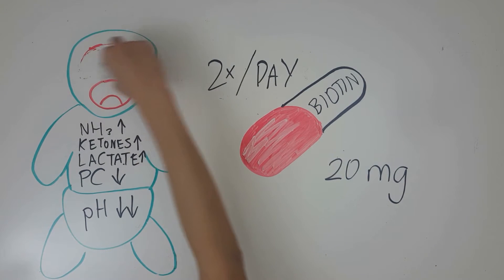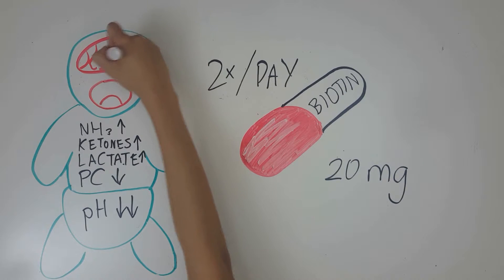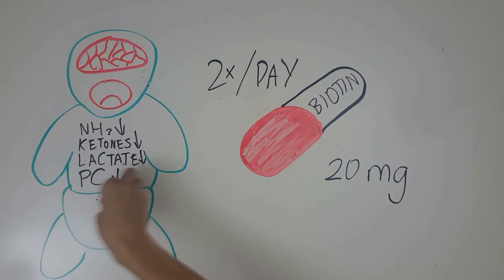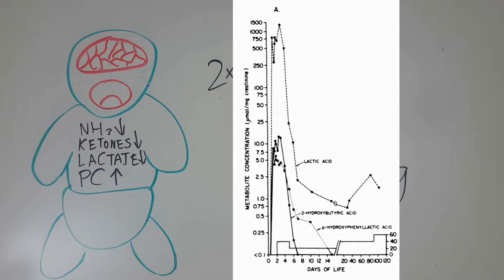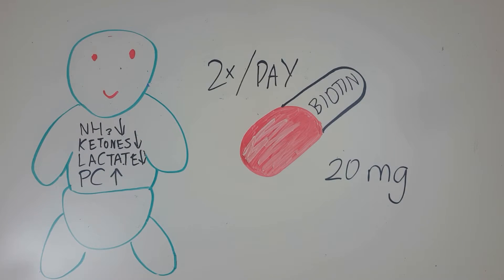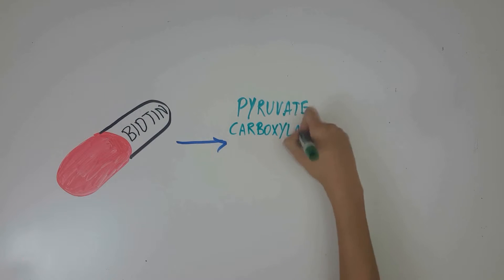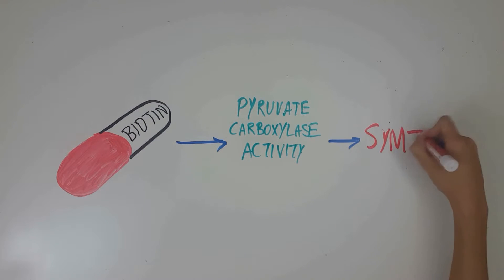The restoration of pyruvate carboxylase activity was able to improve many of the patient's symptoms. After biotin treatment, the EEG returned to normal, there was a decrease in plasma ammonia, a decrease in ketoacidosis, and a decrease in abnormal metabolites including lactic acid. Lactic acid levels peaked at around 1500 micromoles per mg at 4 days of age and decreased to as low as 0.75 micromoles per mg at 40 days. Biotin supplementation offers a promising treatment for pyruvate carboxylase deficiency by directly correcting the enzyme deficiency rather than treating the symptoms.